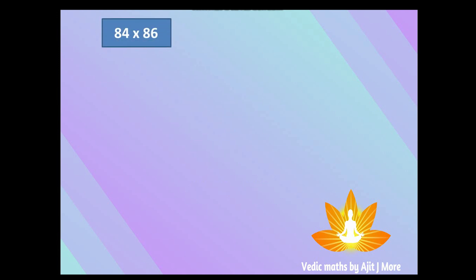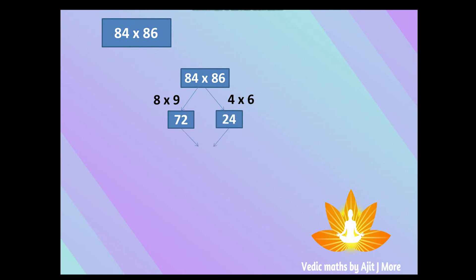Let's take one more example to wind up today's session: 84 × 86. What comes before the unit place? That is 8. What comes after 8? That is 9. So 8 × 9 = 72 — that is the first part. The unit place digits are 4 and 6, so 4 × 6 = 24 — that is the second part. Join them and you get 7224. That's all for today — as always, keep learning, keep evolving, and don't forget to click the bell icon. See you in the next session!